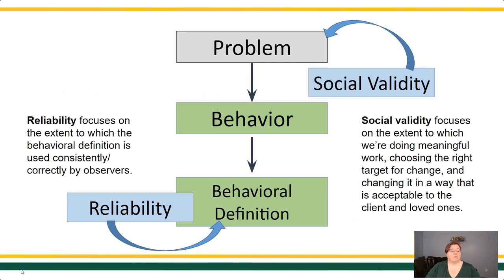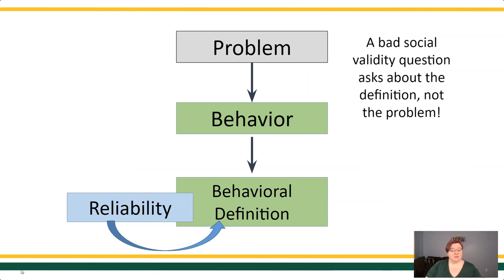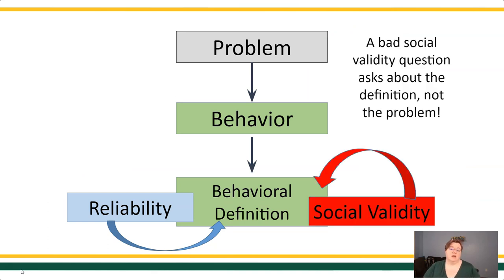Returning to the diagram: reliability focuses on the extent to which the behavioral definition was consistently and correctly used by the observers. But social validity is really the extent to which we're doing meaningful work — choosing the right behavior to change and changing it in a way that is acceptable to the client and the people around the client. If your social validity question has anything to do with the behavioral definition, that's a bad social validity question — that's about the definition, not about the problem.